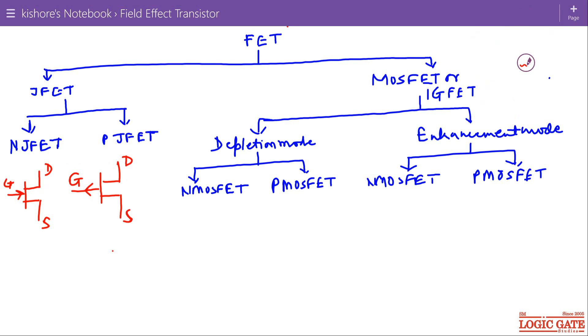Now N MOSFET, this is the symbol for depletion mode N MOSFET and in case of P MOSFET, the direction of arrow is reversed.